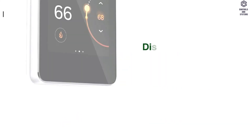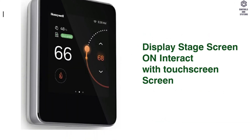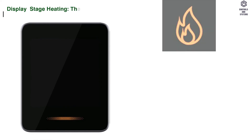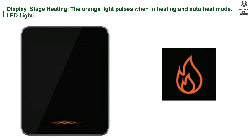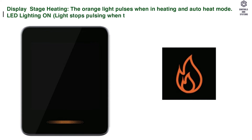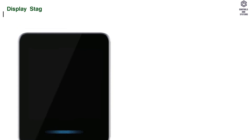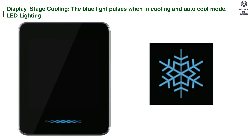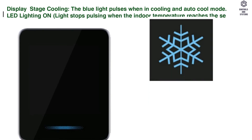Smart LED indication: When the screen is on and interacting with the touch screen, the LED is also on. When the display goes to sleep, the LED turns off. In heating or auto heat mode, the orange light pulses; the LED turns on and light stops pulsing when the indoor temperature reaches the set point. In cooling or auto cool mode, the blue light pulses; the LED turns on and light stops pulsing when the indoor temperature reaches the set point.